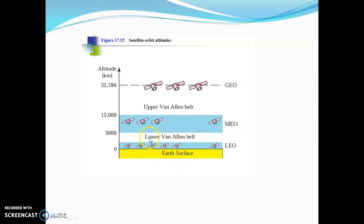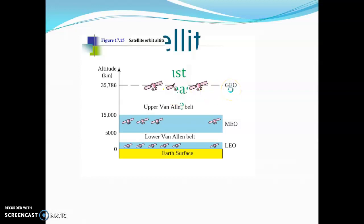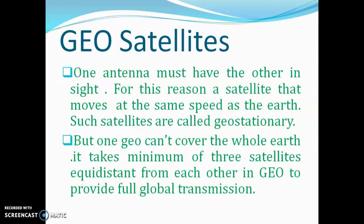Here we can see this is the earth's surface. This is the low Van Allen band and this is the upper Van Allen band. Below the lower Van Allen belt, they are LEO satellites. Between the upper and lower belt — below the upper Van Allen belt — they are MEO satellites. And if they are above the upper Van Allen belt, then they are called GEO satellites — geostationary satellites. We can also use GEO satellites for geographical tagging. With one GEO satellite we can cover a large portion of the earth.